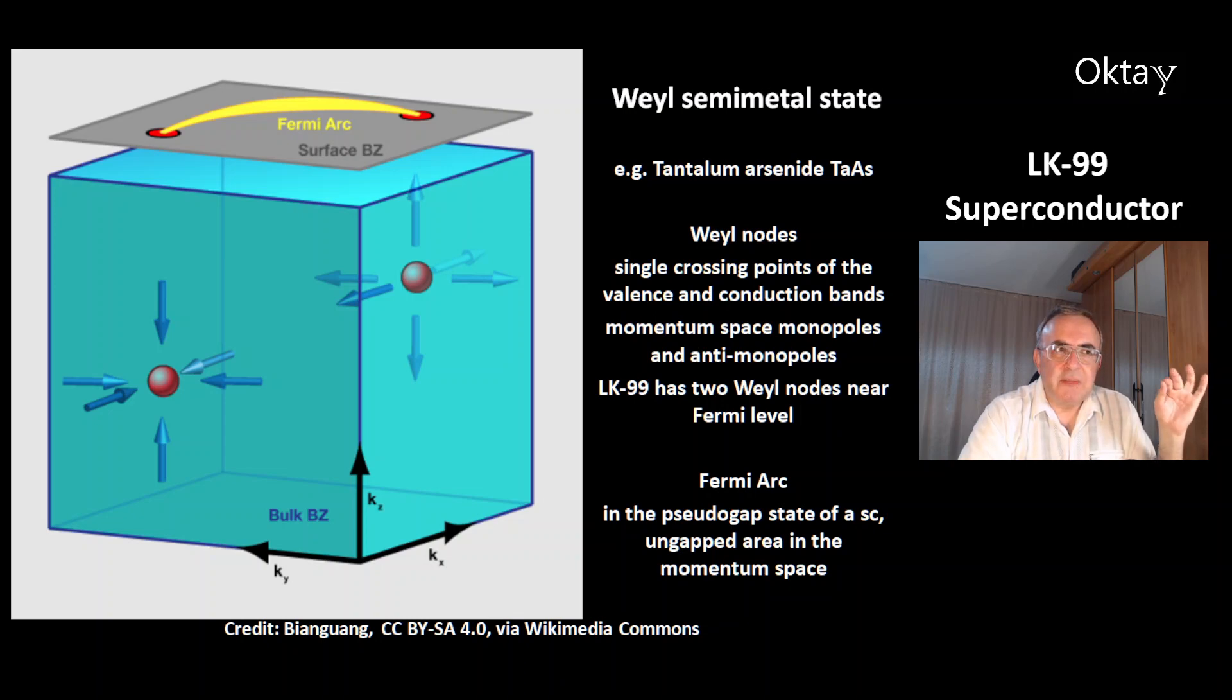According to these scientists, LK-99 has two Weyl nodes near the Fermi level. The Fermi level is the energy that you need to add one more electron to the structure. At the top of the picture you can see the Fermi arc. This is in the pseudo-gap state of a superconductor. This is an un-gapped area in the momentum space.